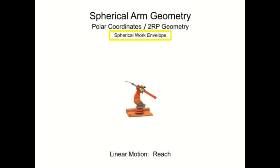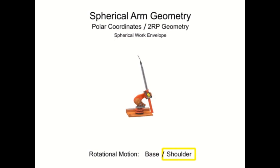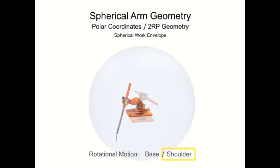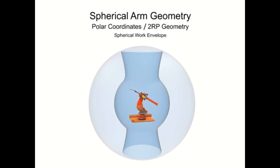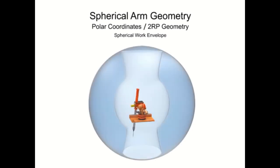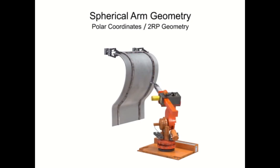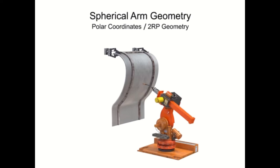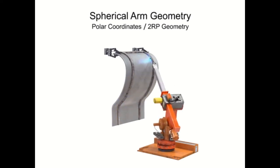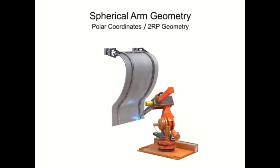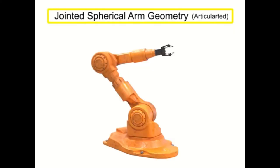The work envelope for the spherical is a sphere, but that depends on factors such as the base angle, shoulder length, shoulder angle, and reach. Although it may look like a cone, that depends on how high or low the spherical robot can reach. It's very versatile, but because of the rotational movement it's quite expensive and requires a wide floor footprint due to the extended arm.